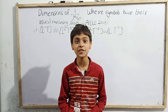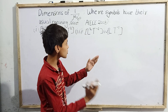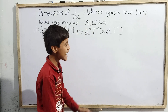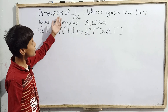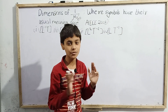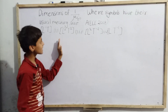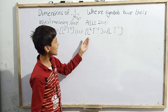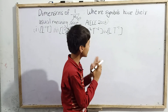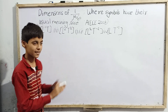Hello everyone, this is Sarim Khan, back with a new topic. Today I am going to solve a question that was asked in AIEEE 2003. This question asks us to find the dimensions of 1/(μ₀ε₀), where symbols have their usual meanings. The options are: L⁻¹T, L²T², L²T⁻², and LT⁻¹. Without wasting time, let's begin our solution.